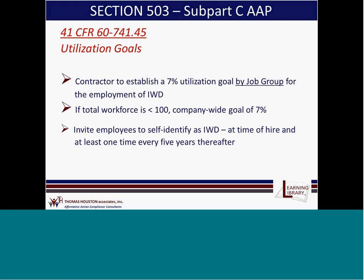Under the regulations, there is now a utilization goal requirement for individuals with disabilities. Just as you establish a minority and female utilization goal, you now have the requirement to establish one for individuals with disabilities, and it is set at 7%. This is to be applied by job group for individuals with disabilities. If your total workforce across all locations is less than 100 employees, you can apply this utilization goal on a bottom-line basis; otherwise, it must be calculated by job group. Thomas Houston will be developing those reports for clients as part of your affirmative action plans moving forward.